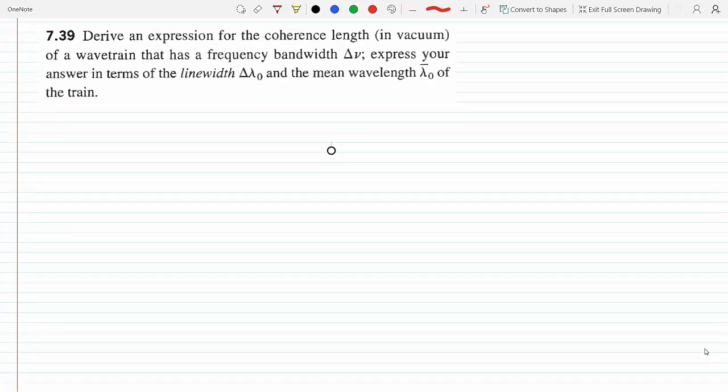So here I will derive an expression for the coherence length in vacuum of a wavetrain that has a frequency bandwidth Δν, express your answer in terms of the linewidth Δλ and the mean wavelength λ₀ of the train.